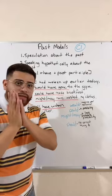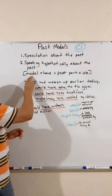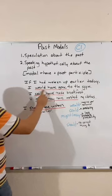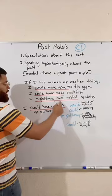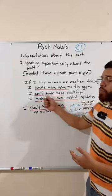Whenever you want to use past modals, it's important to use three different verbs: the modal verb, 'have,' and the past participle. Would have — past participle. Could have — past participle. Might have — past participle. May have — past participle. And should have — past participle. You can combine the modal and 'have' to give a different sound — instead of 'would have,' you can say 'woulda'; instead of 'could have,' you can say 'coulda.'